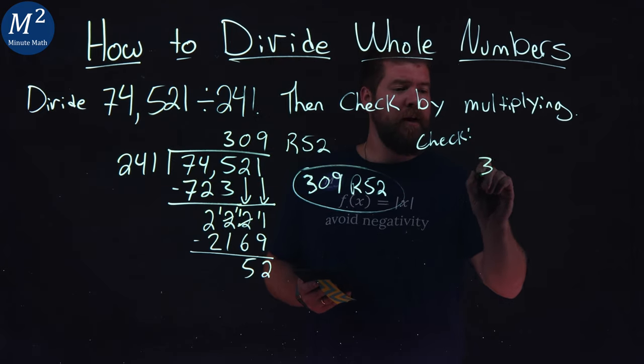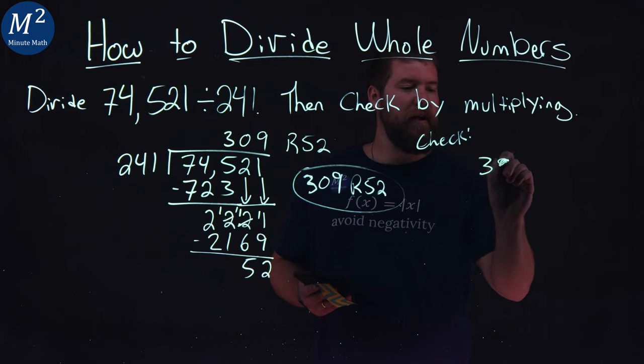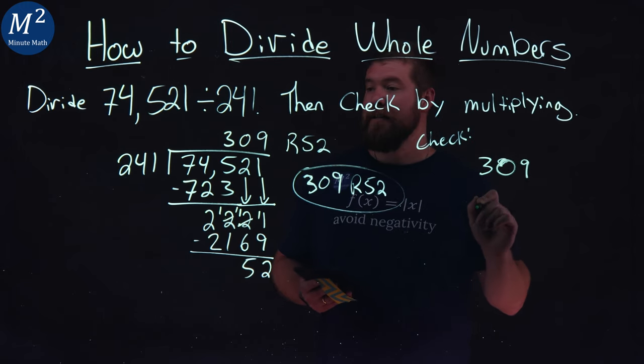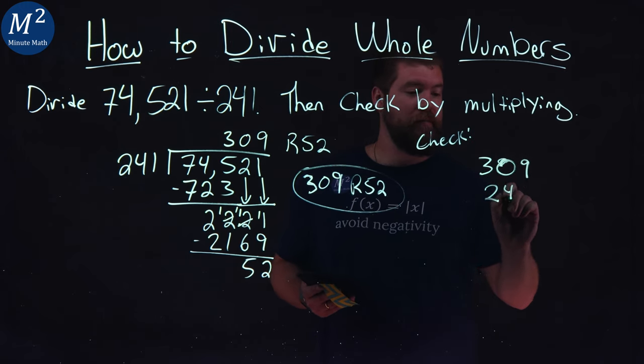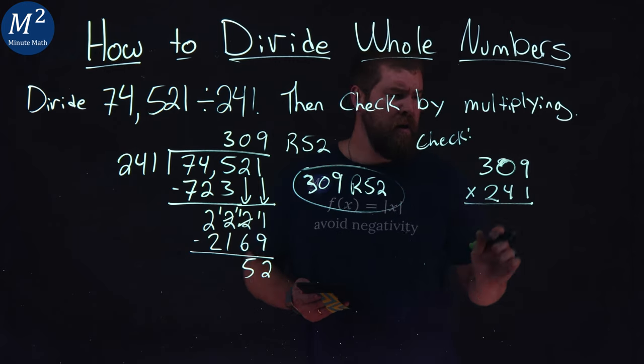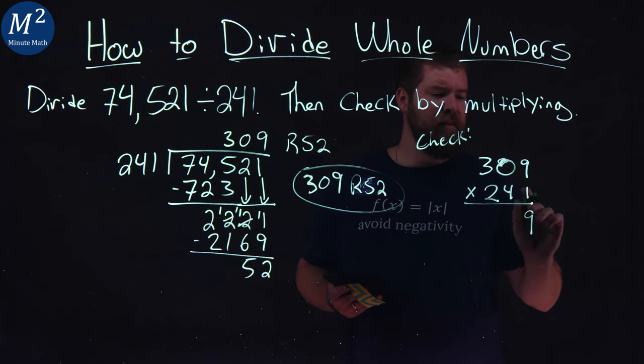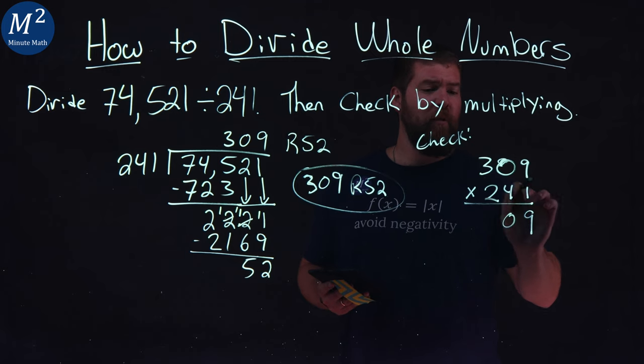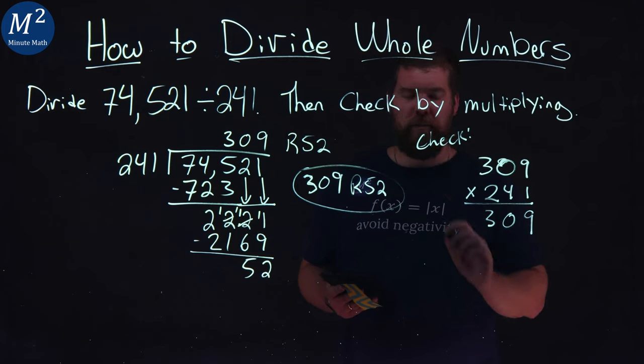So, I'm going to take my 309. I keep running a 9 here. 309 times 241. Let's go multiply that out. 1 times 9 is 9. That's easy. 1 times 0 is 0. 1 times 3 is 3. Not too bad.